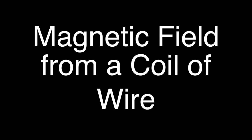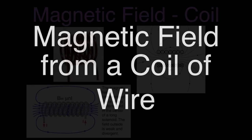In today's video, as you can see, I'm going to be going over the magnetic field for a coil of wire — specifically, a coil of wire that has a current running through it.